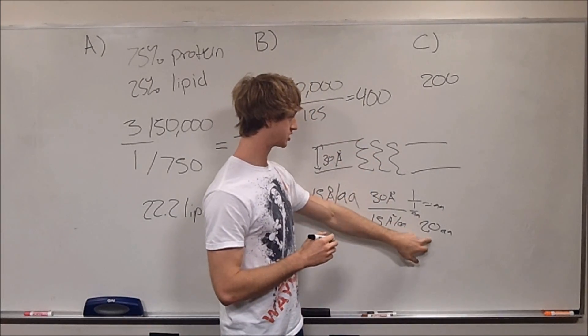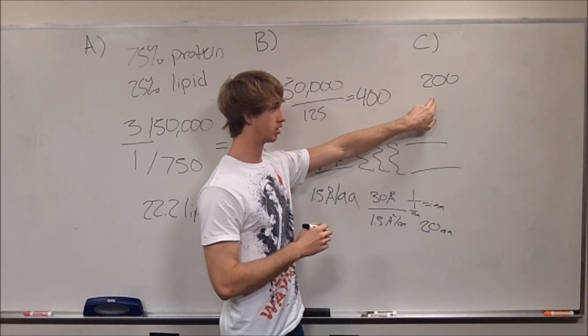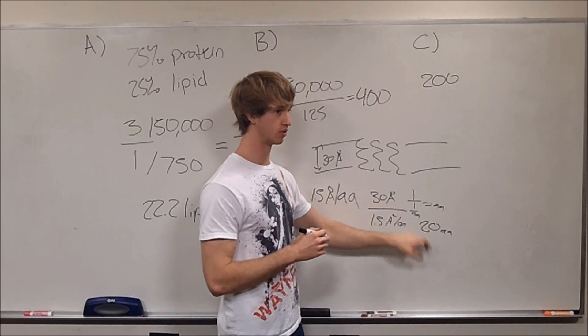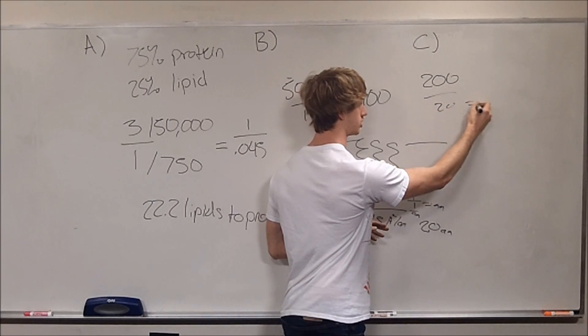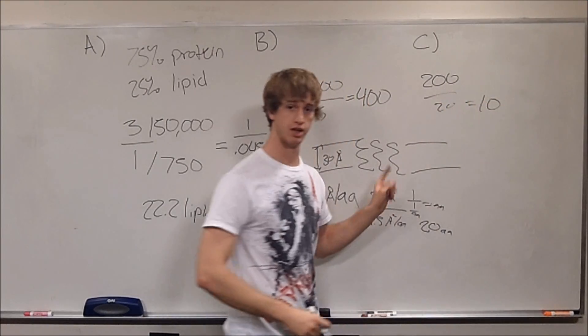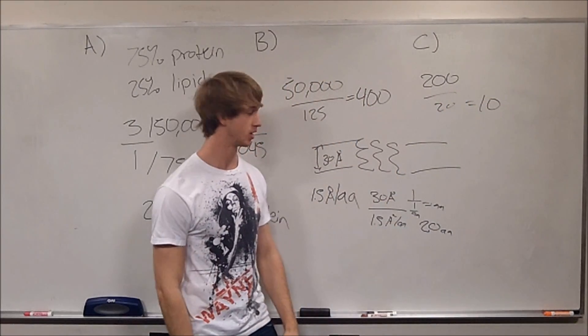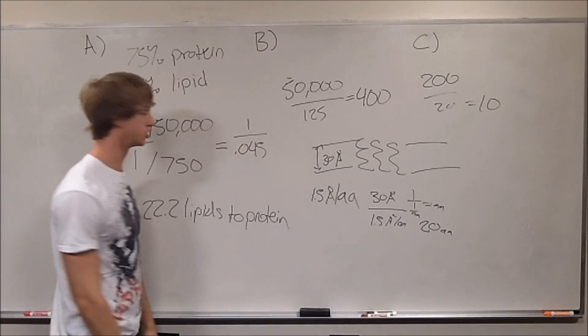So we have 20 amino acids per helix. We have 200 amino acids total. So if we take 200, divide this by 20, we should get a total of 10 helices crossing the membrane. And that is how you do problem eight.